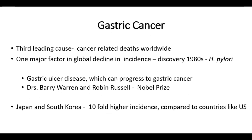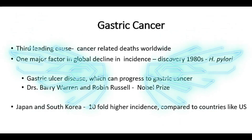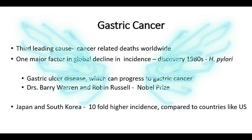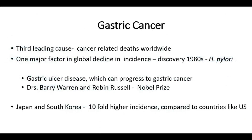Gastric cancer is the third leading cause of cancer death in the world. One major factor in the global decline of gastric cancer is the treatment available for H. pylori. The discovery of H. pylori was in 1984 by Dr. Barry Marshall and Robin Warren, for which they won the Nobel Prize, and after that there has been a gradual decline in gastric cancer worldwide.